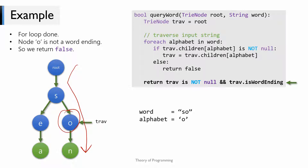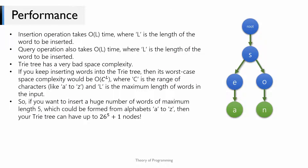Now let's talk about performance. The insertion operation always takes O(L) time, where L is the length of the word to be inserted, because the for loop runs for the length of the input word with constant-time operations inside. The query operation also takes O(L) time in the worst case. These time complexities are very fast if you want to insert thousands of words and query millions of times. However, the downside is that the Trie tree has very bad space complexity.